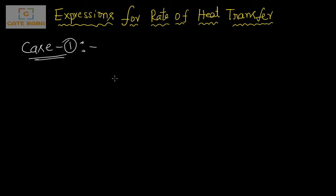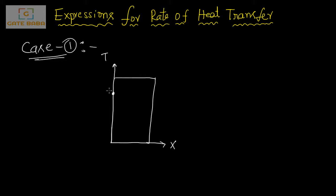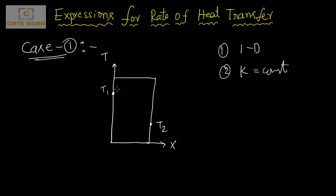Case 1 is the simple slab. I am attaching the coordinate system to the slab: in the x-direction is thickness, and the temperature axis goes from initial temperature T1 on one side to T2 on the other side. The assumptions to derive the expression for rate of heat transfer are: first, one-dimensional heat transfer; second, K is constant throughout the material and does not vary with temperature.